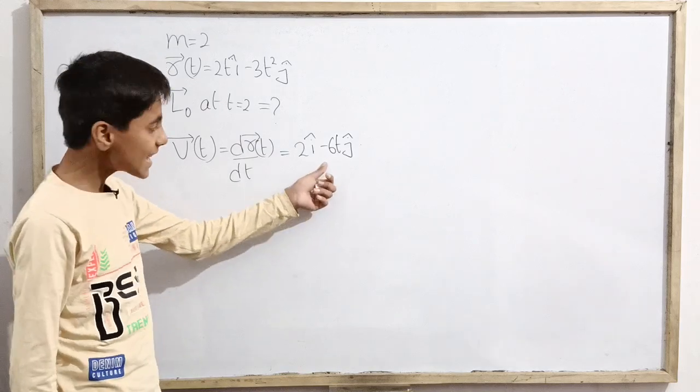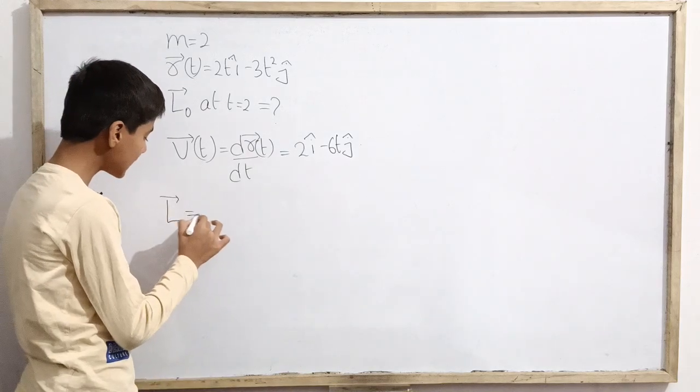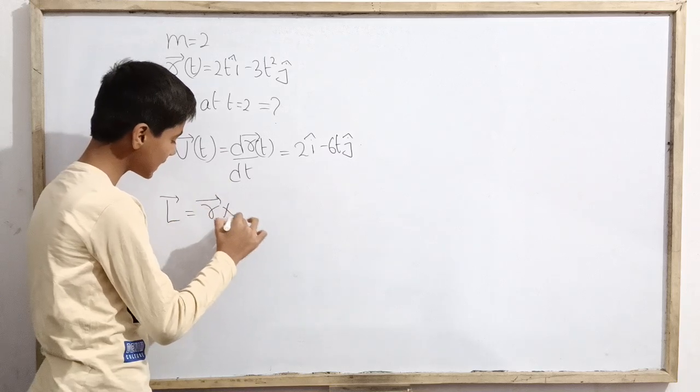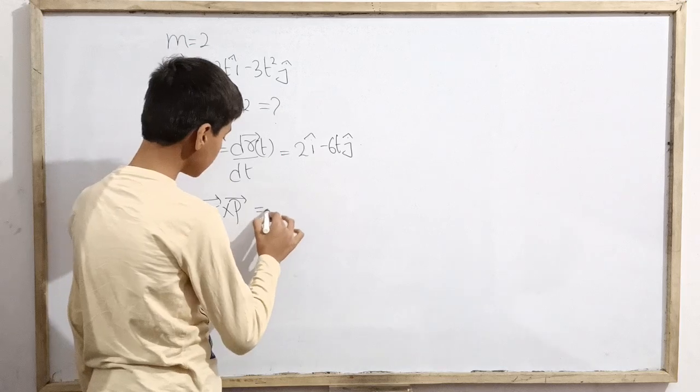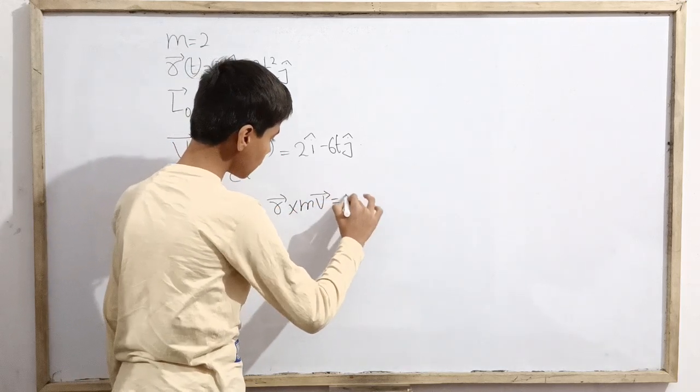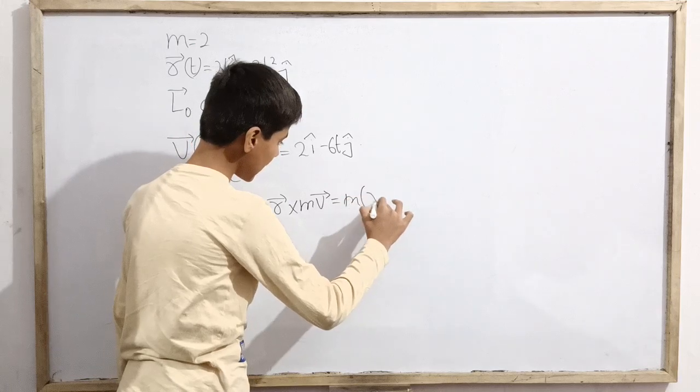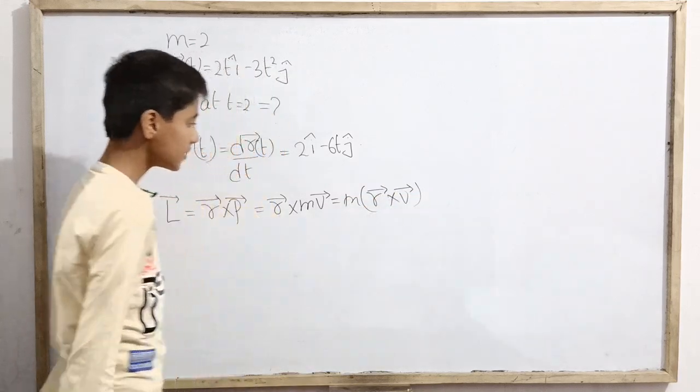We got velocity as a function of time. Now for angular momentum, we know that vector L equals vector r cross vector p. That is vector r cross m vector v. Taking m outside, that is m times vector r cross vector v.